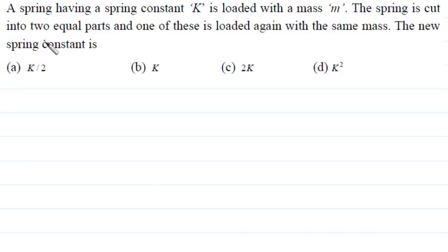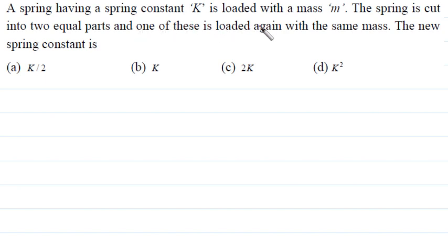Seventh question: a spring having spring constant k is loaded with a mass m. The spring is cut into two equal parts and one of these is loaded again with the same mass. The new spring constant is?